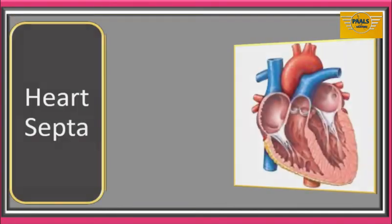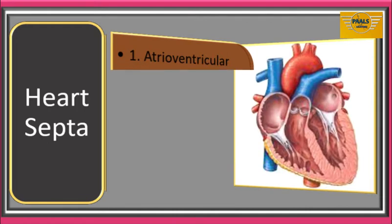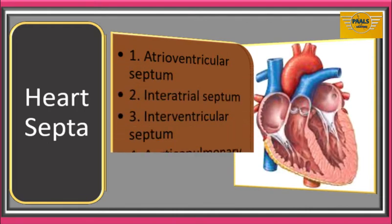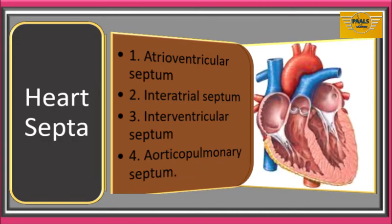We will start with formation of the heart septa, also called septation. The single lumen of the primary heart tube will be partitioned into four definitive chambers by the formation of four septa: the atrioventricular septum, interatrial septum, interventricular septum, and aortico-pulmonary septum.